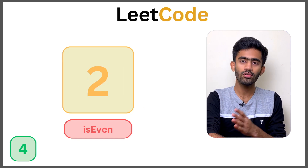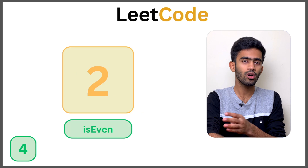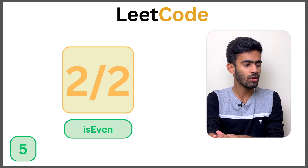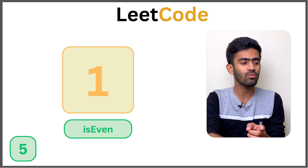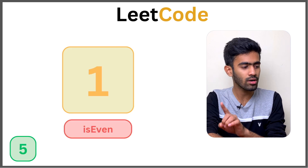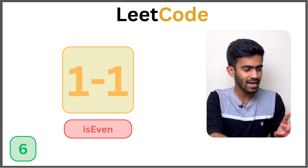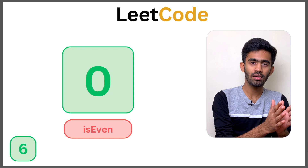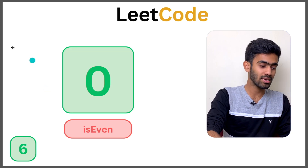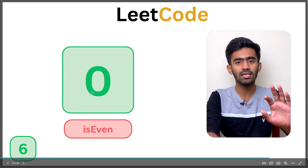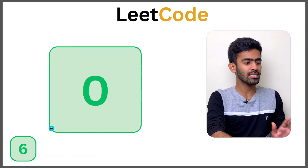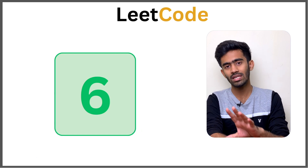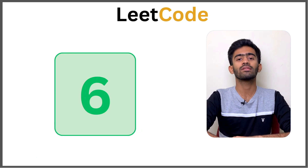1 minus 1 is 0. The counter increment is 6. So the total number of steps to reach 0 is 6. Steps to zero equals 6. This is a very simple question.